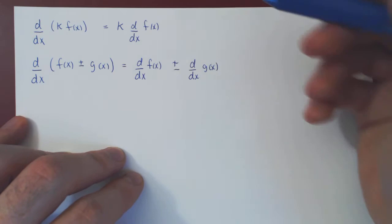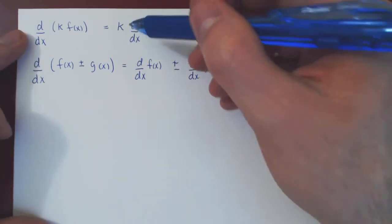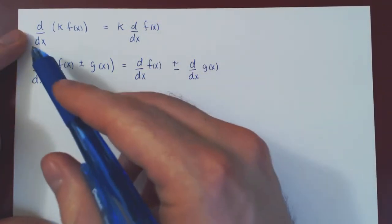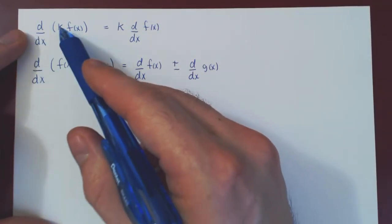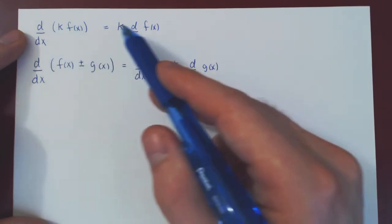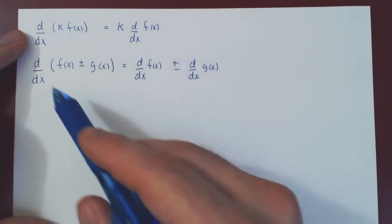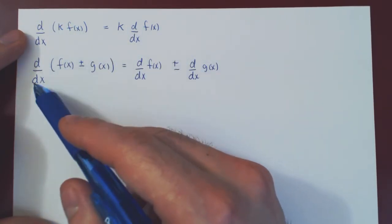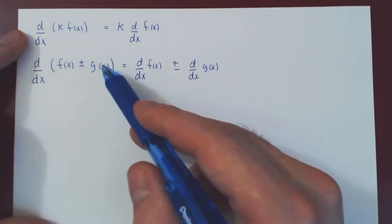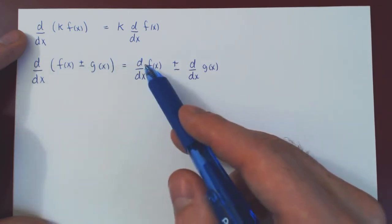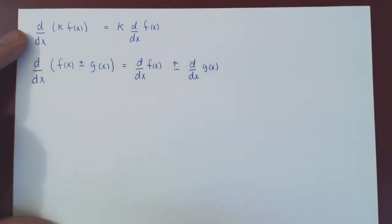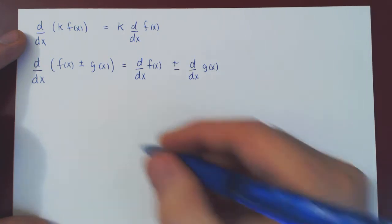So those are two very basic but fundamental properties of the derivative. We can move constants in and out of the derivative, and if we differentiate a sum or difference of functions, we can differentiate the functions one at a time. Well, the integral has the exact same properties.